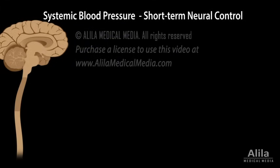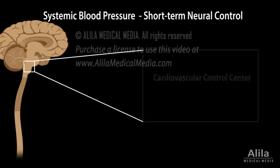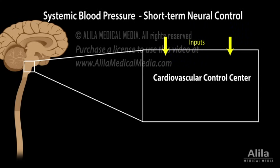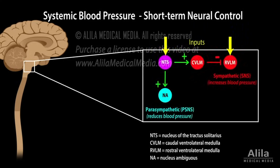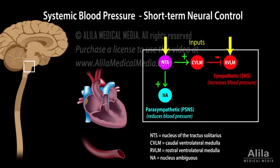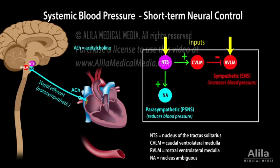The cardiovascular control center is located in the lower pons and medulla. It integrates various inputs and modulates the autonomic nervous system, the ANS, to control cardiac output and vascular smooth muscle tone. The parasympathetic arm of the ANS, the PSNS, decreases heart rate by releasing acetylcholine, which acts to reduce the excitability of the SA node and AV node. PSNS activation results in lower blood pressure.